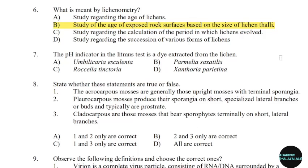7th question: The pH indicator in the litmus test is a dye extracted from the lichen. Correct answer: Option C — Rocella tinctoria.